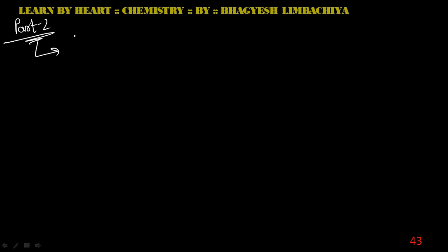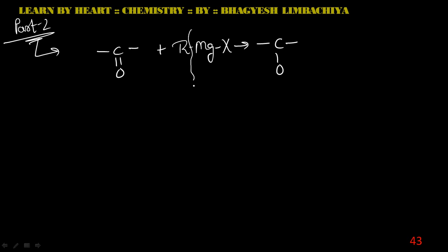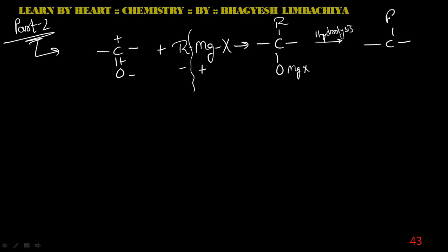In Part 2, first preparation is from C double bond O (carbonyl compound). When it reacts with a Grignard reagent RMgX, in the first step this bond is broken: MgX becomes positive, R becomes negative, carbon becomes positive, and oxygen becomes negative. R attaches to carbon and MgX attaches to oxygen. When hydrolyzed, we get OH and MgOHX as a side product.